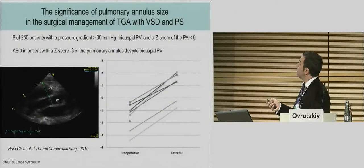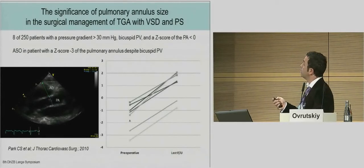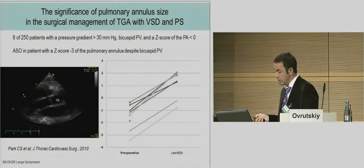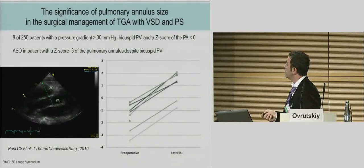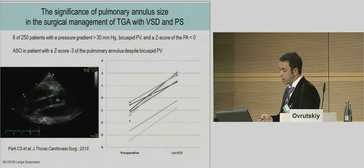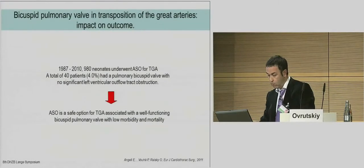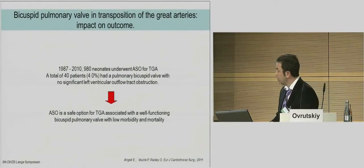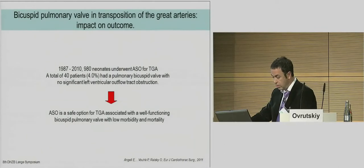Another publication regarding the size of the pulmonary annulus and bicuspid pulmonary valve: eight of 250 patients with a z-score lower than zero were operated with arterial switch operation, and some had a score of minus three. But even at follow-up, we can see an increase in the pulmonary annulus. Two of them were nevertheless re-operated. A 2011 publication with approximately 1,000 patients — 40 of them with a bicuspid valve — showed excellent results also for this kind of valve pathology.